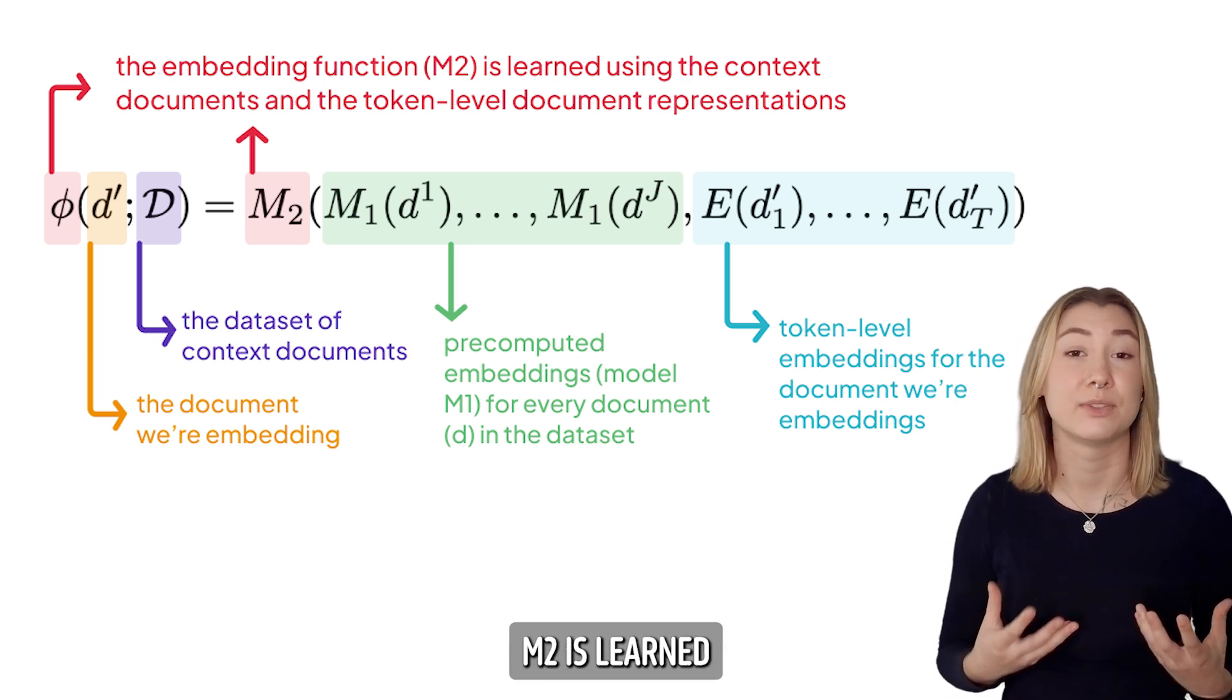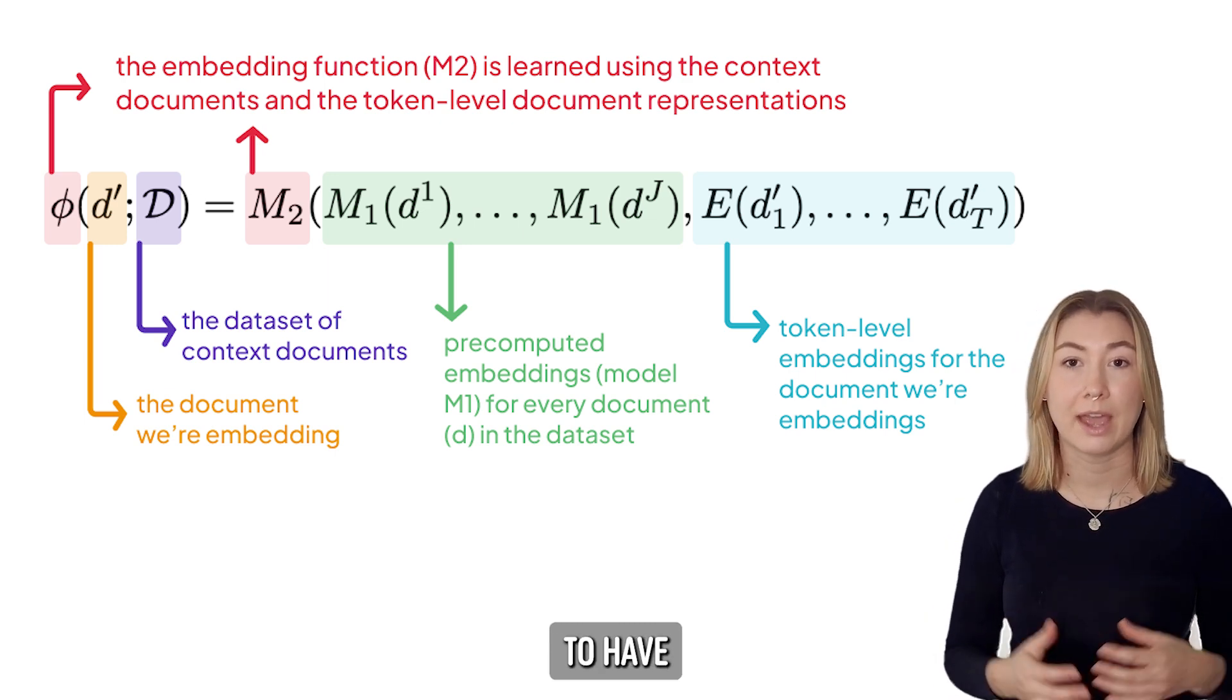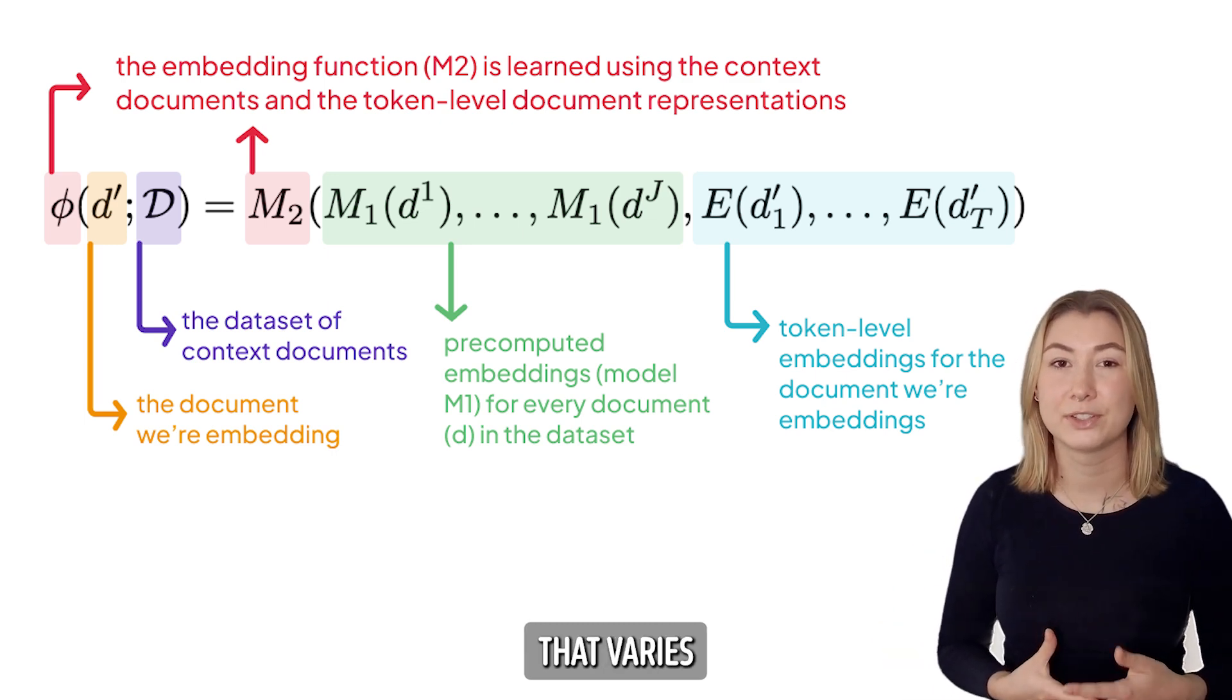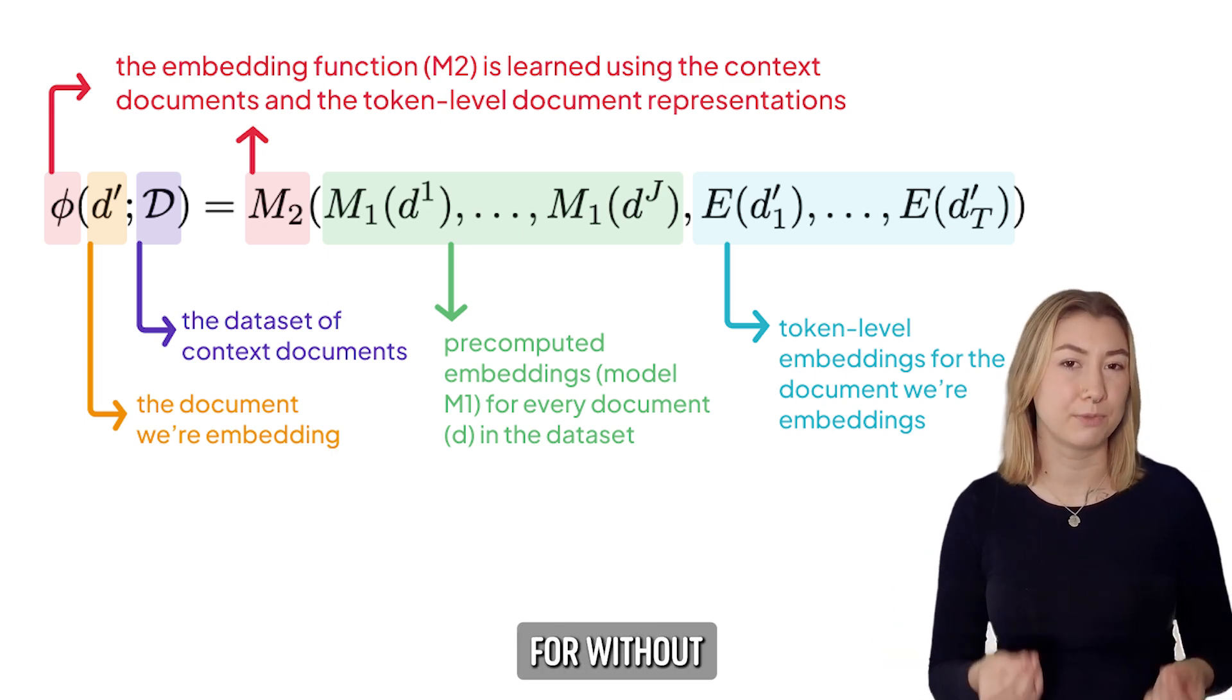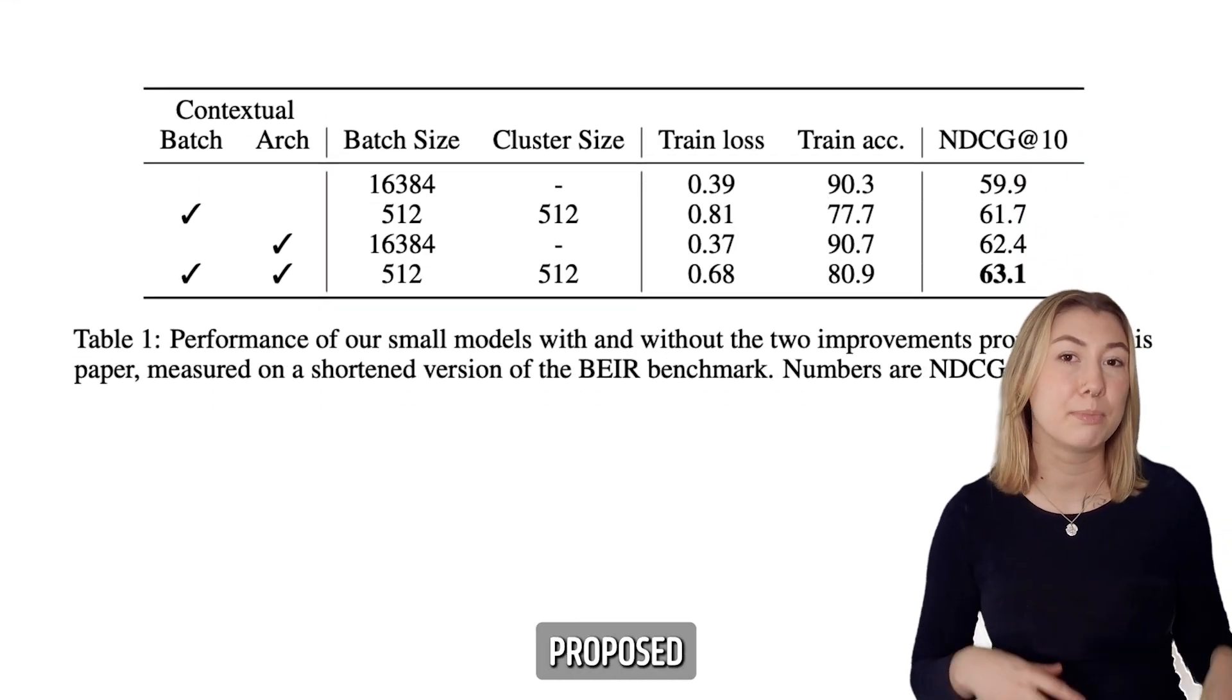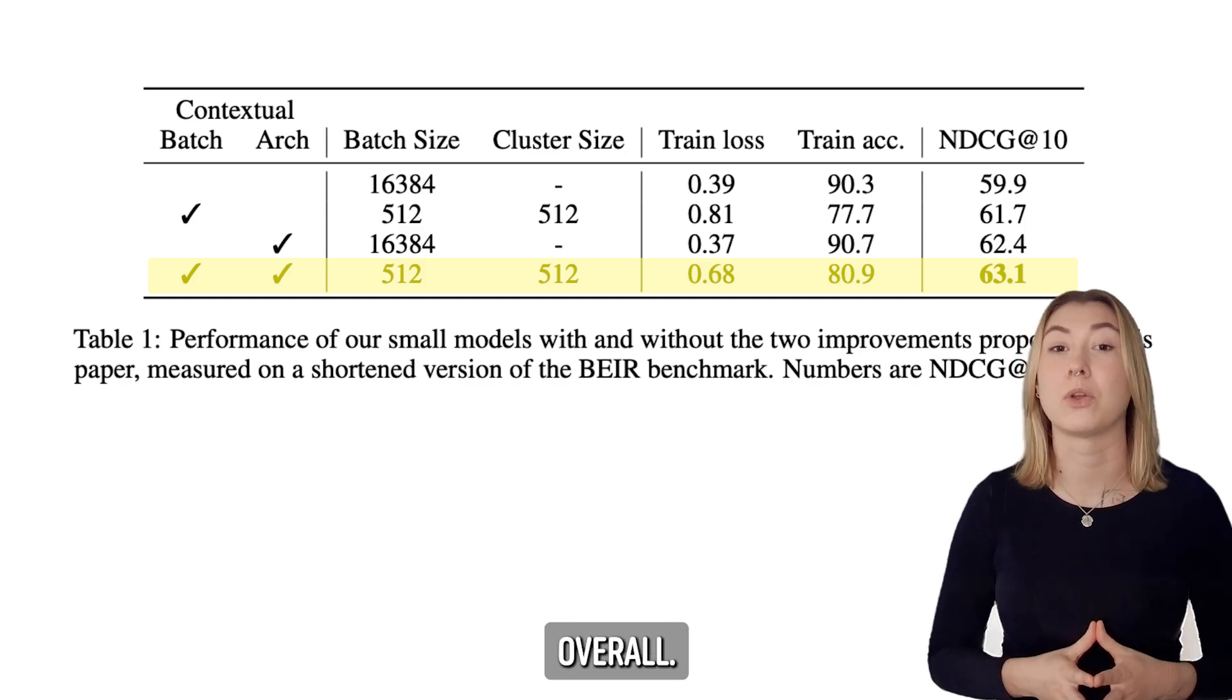During training, this function M2 is learned using both pieces of information, allowing the document embeddings to have the context of the full dataset. With this, we can have an embedding function that varies based on the domain we're using it for, without any fine-tuning or extra training needed from the user. The authors found that using both of their proposed methods, the batching and the embedding function, gives a better retrieval score overall.